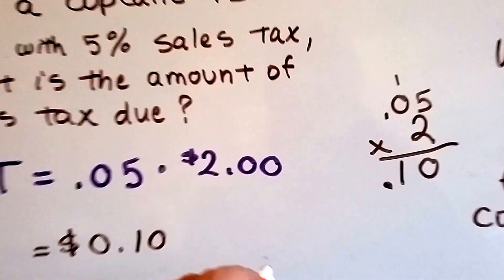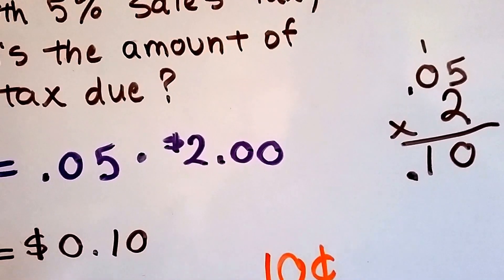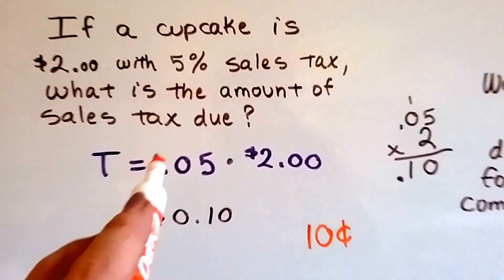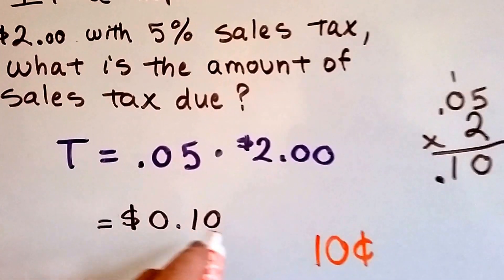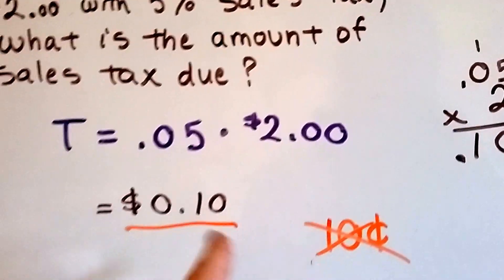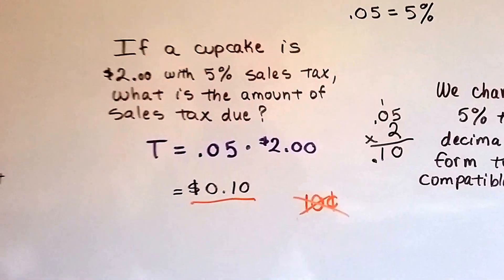We could also use the cent sign, couldn't we? We could have gone like this, 10 cents. But because we're using decimal points in here and here, it's better to do it this way because we're keeping it all compatible. That's the dimensional analysis.